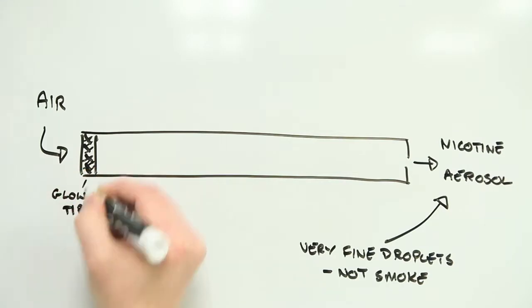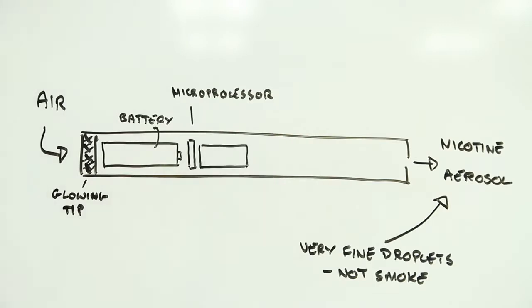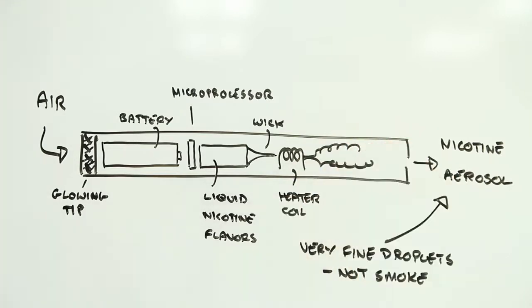E-cigarettes use a liquid such as glycerin into which ingredients like nicotine and even flavorings are dissolved. When you take a puff, this liquid is vaporized in a hot wire and forms a cloud of fine particles that, when inhaled, penetrate deep into your lungs.